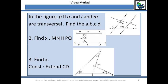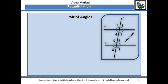Let's begin. Over here, m and n are parallel to one another, and the line which is crossing or intersecting them, that is l, is known as the transversal. There are so many angles formed in this, so let us discuss one by one what these angles are called.